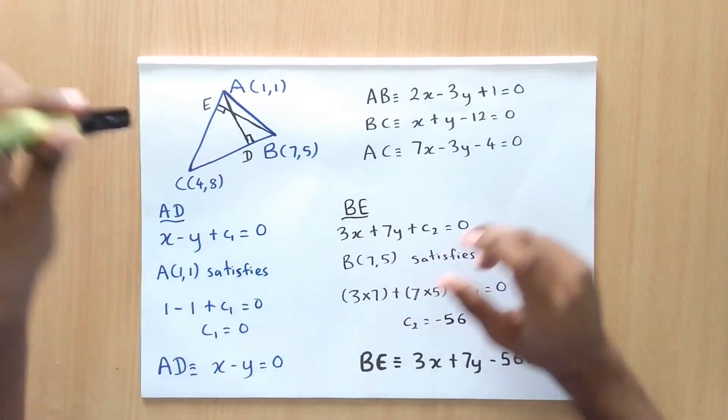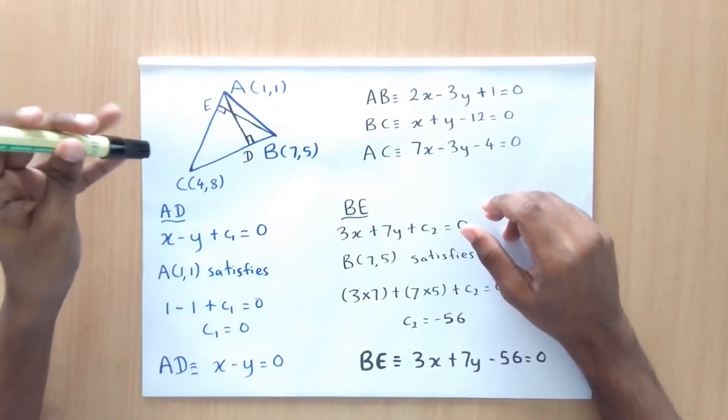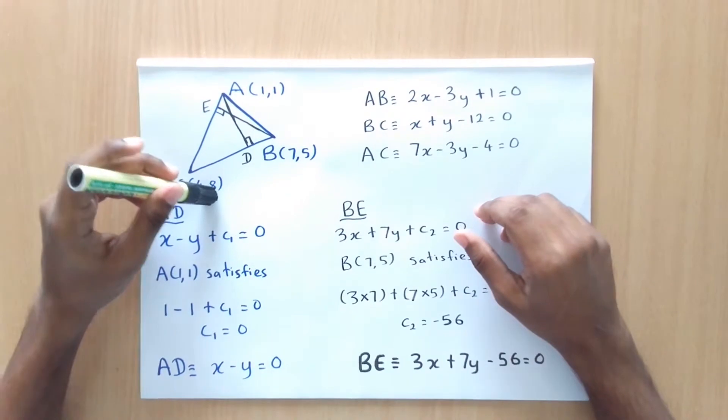To prove this, let's take this triangle ABC with coordinates 11, 75 and 48.